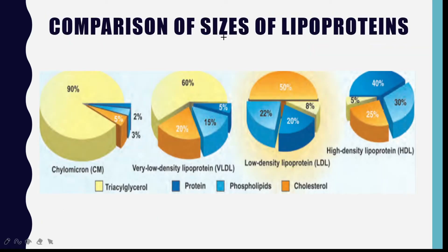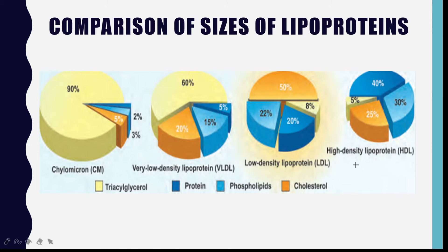Regarding the size of lipoproteins: chylomicrons have the greatest size compared to all other lipoproteins. Chylomicrons are greater than VLDL, VLDL is greater than IDL, IDL is greater than LDL, and HDL has the smallest size.